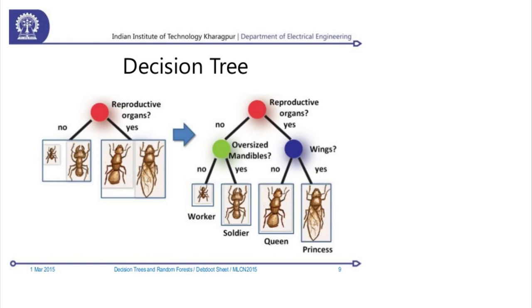So they look like this, a decision tree. Reproductive organs? Yes, no, no. Oversized mandibles? Yes. Wings? And then worker, soldier, queen, and princess.